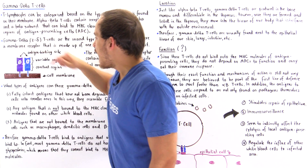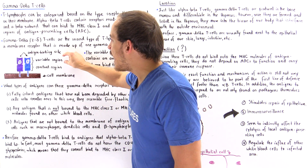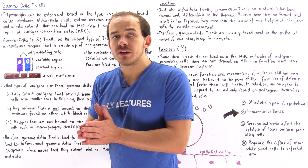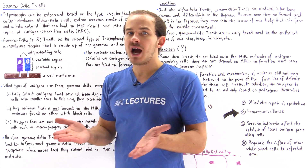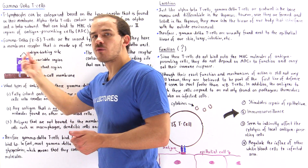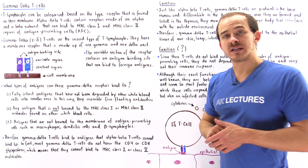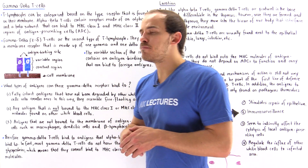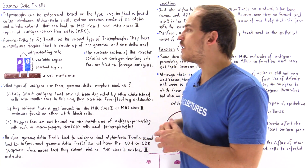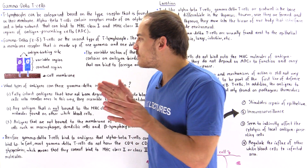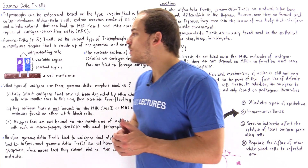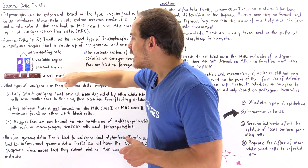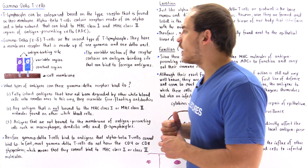In the diagram, the purple represents the gamma subunit and the blue represents the delta subunit. The variable portion of the T cell receptor varies from one cell to another because this is the portion that contains the specific sequence of amino acids that can bind to a particular antigen — it contains the antigen-binding site. The constant region does not change significantly between cells and is the portion that anchors the receptor onto the cell membrane of the gamma-delta T cell.